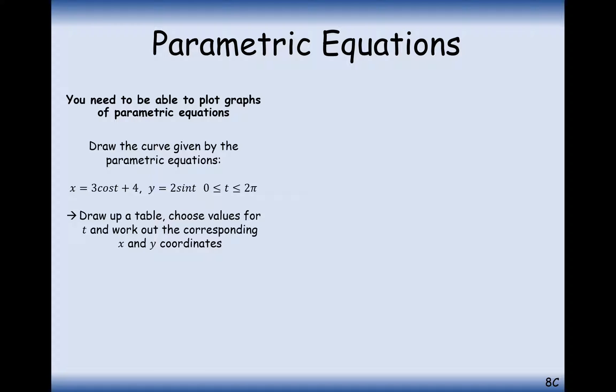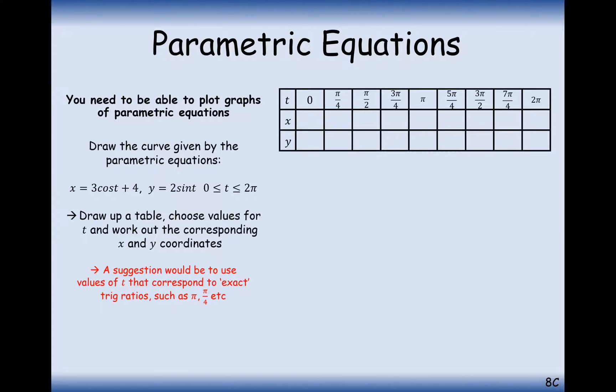So what we can do and what we'll do for now until we've spotted the shortcuts is plot a graph in between 0 to 2π, plotting coordinates every π by 4 radians and then we'll sketch the graph and join them all up together again.